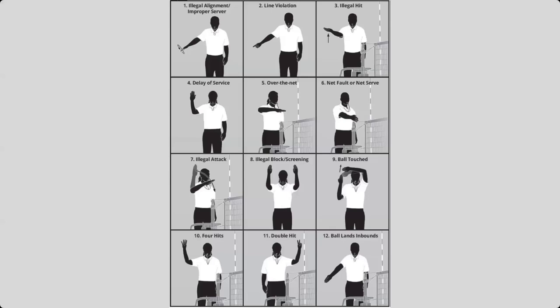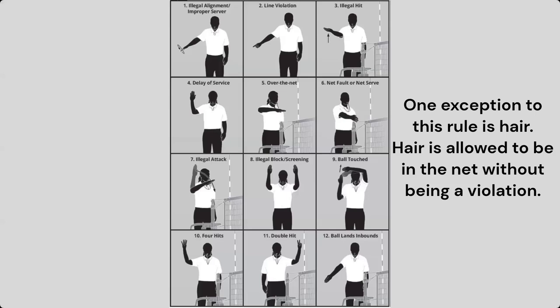Number 6, the net fault or net serve. The net serve is an easy one. Somebody goes back to serve, they serve, it goes in the net, it doesn't make it over. As the R1 you blow your whistle. Tweet. Award the point to the other team because net fault. The net fault is when a player is in the net. For VBA, we do not allow anyone to touch the net. If a part of someone's body is in the net, even outside the antennas at any time during play, that is illegal. That is one of the VBA modifications that we use. So make sure that if you see someone in the net, we are calling it.